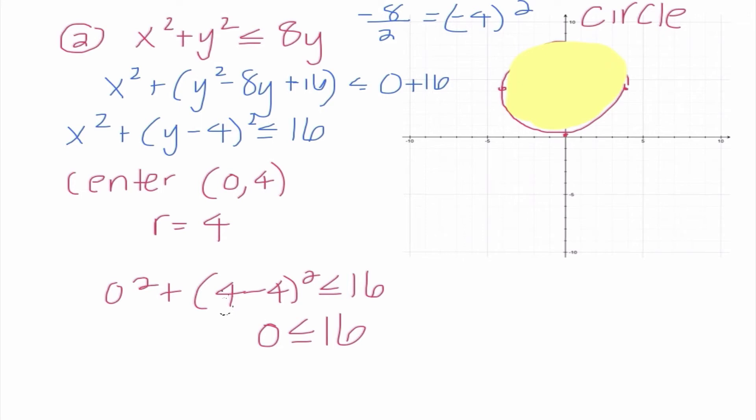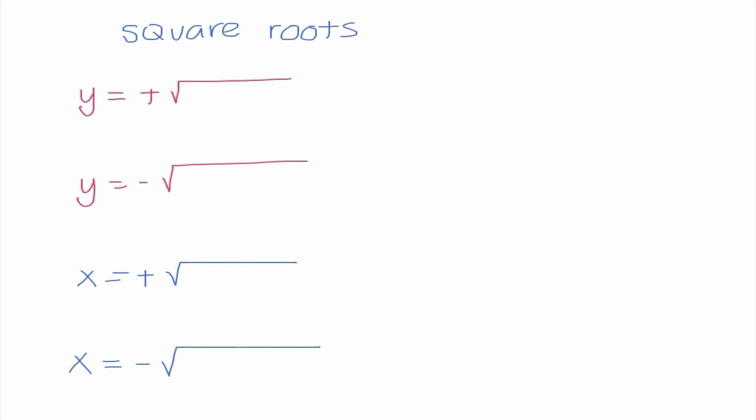So inequalities, the only differences we need to determine is it solid or dashed, and where are we going to shade. Square roots actually make us think a little bit. Okay, so with square roots, we have four different options. We're either going to have y equals and either a positive square root or a negative square root, or we're going to have x equals either a positive square root or a negative square root. So this is something that we need to memorize. However, we can kind of use some logic to help us out.